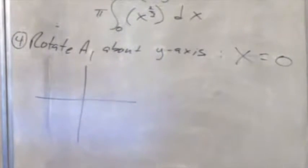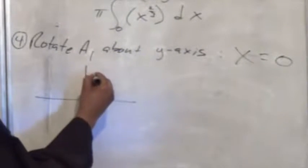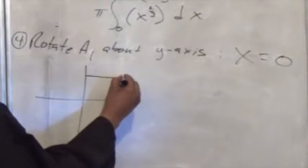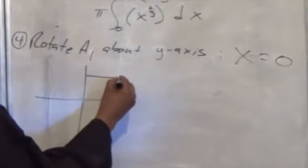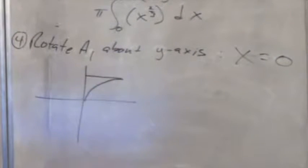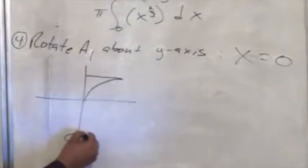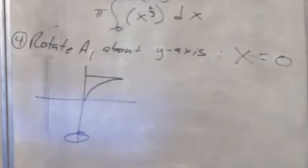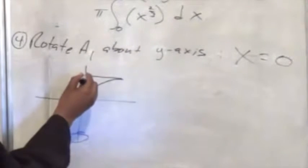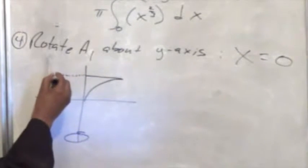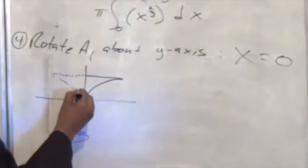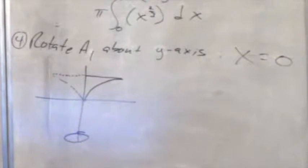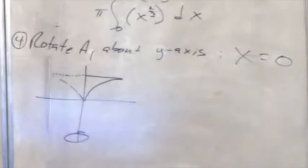So A1 — that's the look of A1. I'm going to rotate that about the y-axis. Let's create the image, and then the image or the illusion of rotation.